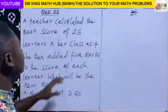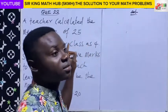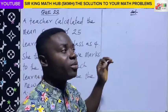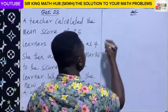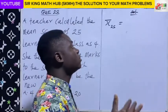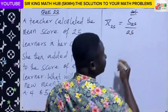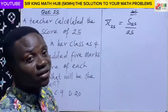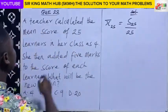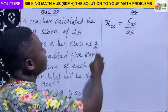Now back to the question. The teacher calculated the mean score of twenty-five learners in her class as four. So there were twenty-five learners. Using the idea of twenty-five learners, the mean score equals the sum of individual scores of the twenty-five learners divided by twenty-five. The mean score of the twenty-five learners was four.